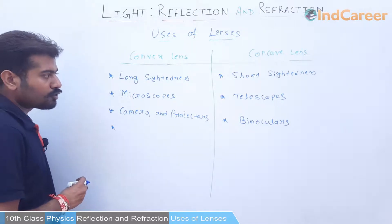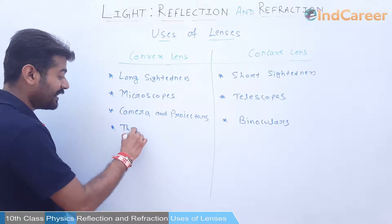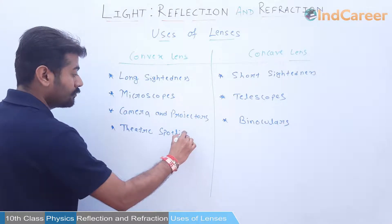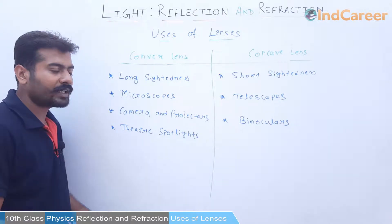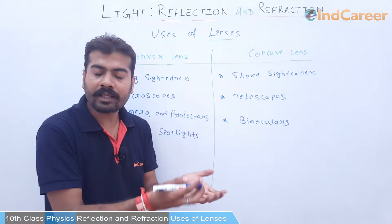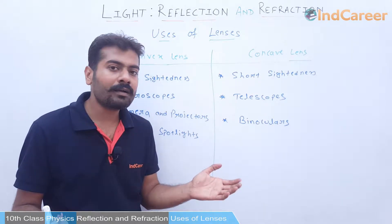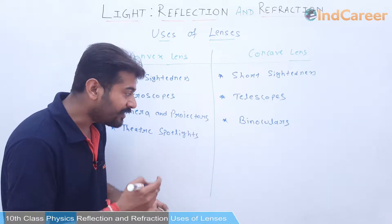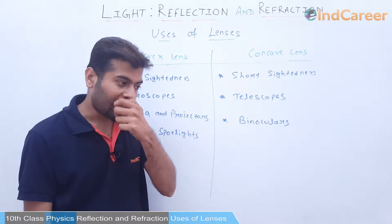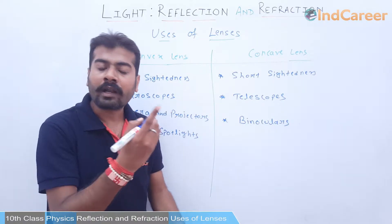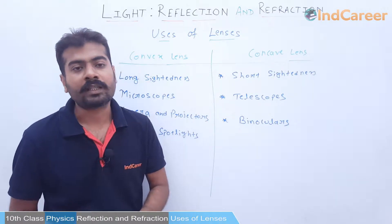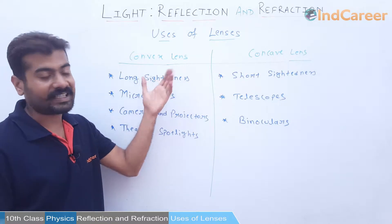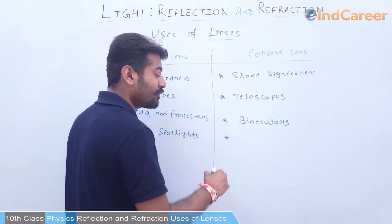Convex lenses are also used in spotlights in theaters. Spotlight का मतलब होता है — theater में या auditorium में किसी एक particular person के उपर focus करना होता है. The rest of the auditorium will be dark but we focus on a particular person on the dais, on the mic, or on the screen. This is used in cinema halls, theaters, auditoriums, and रंगमंच. So theater spotlights consist of convex lenses.